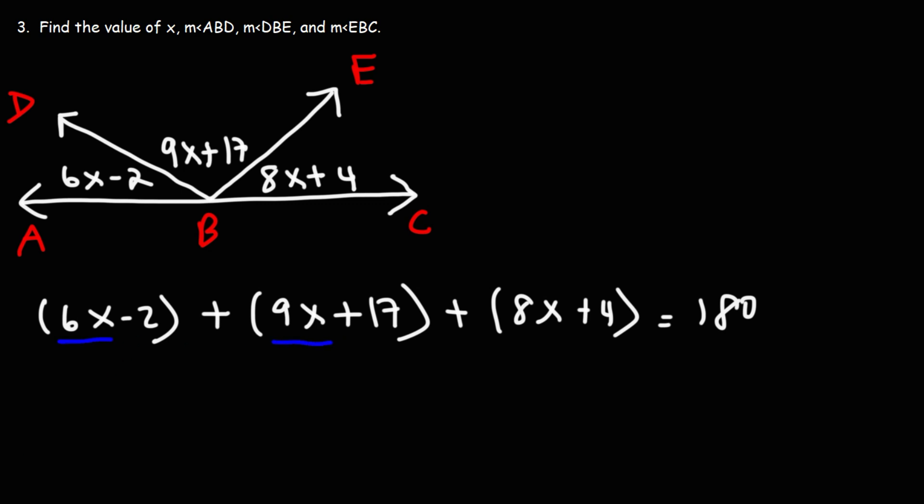6X plus 9X, that's 15X plus 8X. That's a total of 23X. Negative 2 plus 17, that's positive 15 plus 4. That's going to give us positive 19.